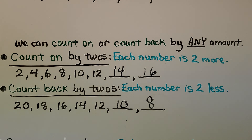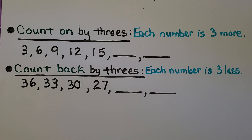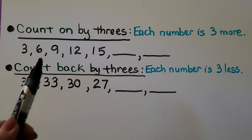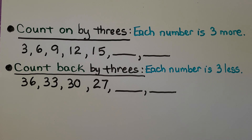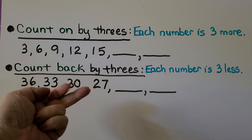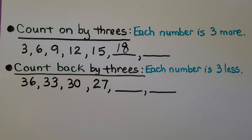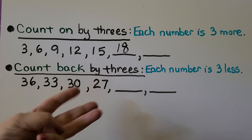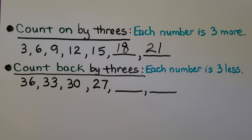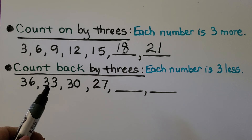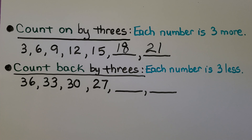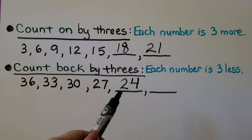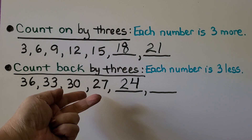We can count on or count back by any amount. We can count on by 3s — each number is 3 more: 3, 6, 9, 12, 15. What is 3 more than 15? 18. And 3 more than 18 is 21. We can also count back by 3s: 36, 33, 30, 27. Each number is 3 less — if you said 24, you're correct. And 3 less than 24 — counting back: 24, 23, 22, 21.